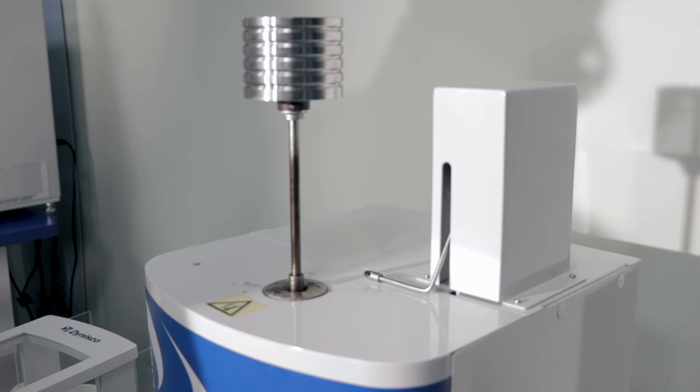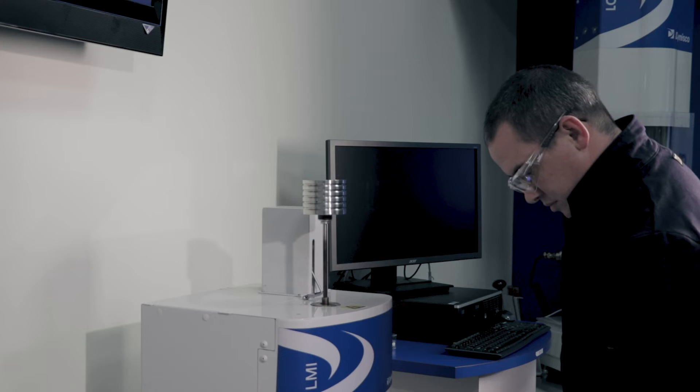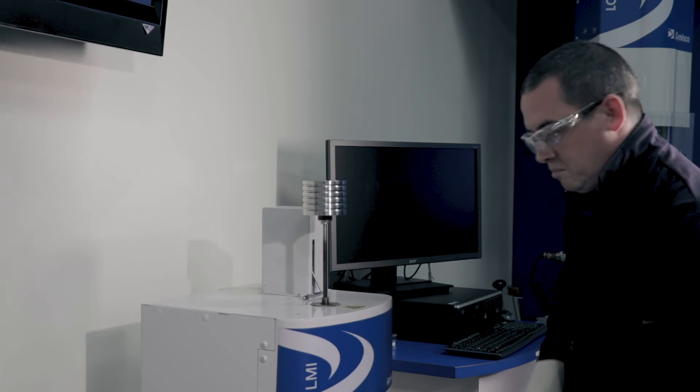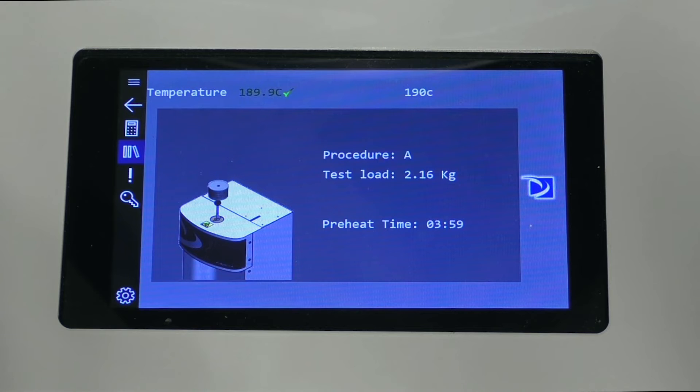The weight load is selected from the table of the ASTM standard, respective ISO standard, or the supplier specification sheet. Now the attendant must wait the preheat time for the polymer to melt.